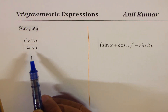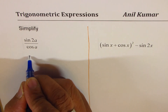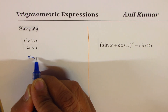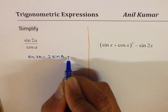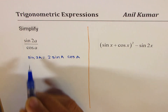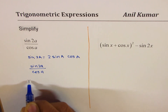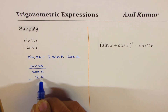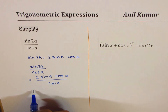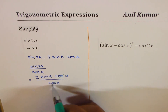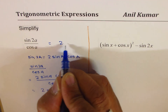The next expression is sin 2a divided by cos a. Using the double angle formula sin 2a = 2 sin a cos a, we get 2 sin a cos a divided by cos a. The cos a cancels, and we get 2 sin a.